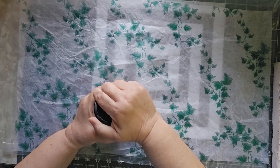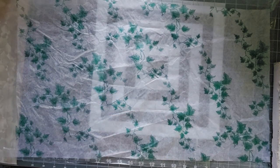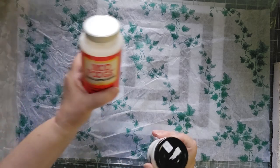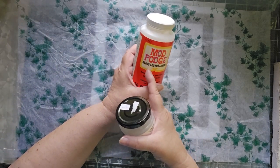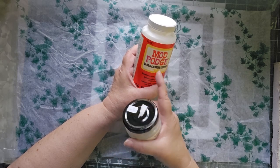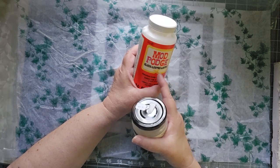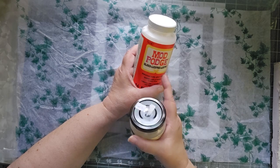So the Mod Podge that I'm using, and I may have to go run it under water, this is a gloss, which was my mistake. I generally prefer the matte, but I bought the wrong one and I'm just going to use it up, and then when it's gone I'll buy the right one.